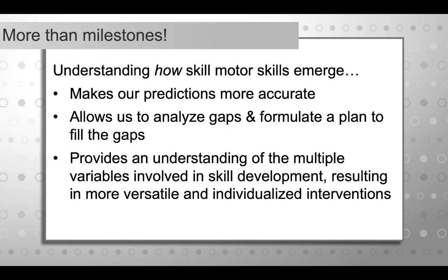We're really going to focus today on how motor skills emerge. Understanding how motor skills emerge can first of all make our predictions more accurate. If we know more than just the order of which motor skills develop — if we actually understand quality of movement and how skills build on top of one another — we can better predict where kids are going next. It also allows us to analyze gaps and formulate a plan to fill them, understanding the difference between a child who is developing typically but delayed versus a child exhibiting abnormal motor skills or scattering of skills.